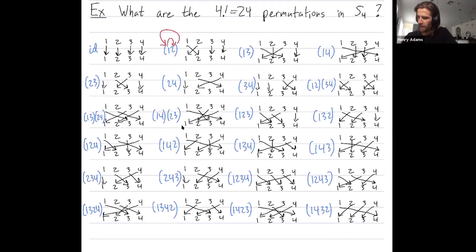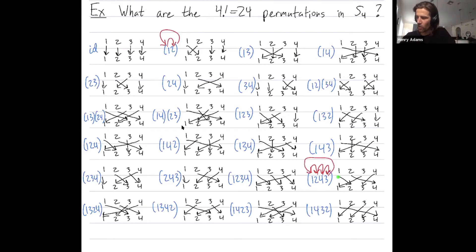Let's jump down to this four-cycle. This notation is saying that one goes to two, two goes to four, four goes to three, and then three goes back to one. You can follow the arrows to see that: one goes to two, two goes to four, four goes to three, and three goes back to one.